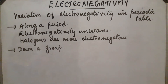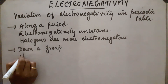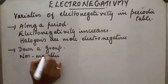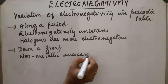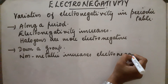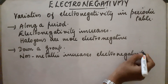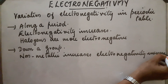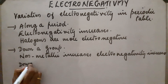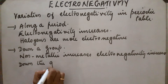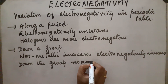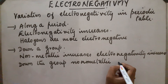Electronegativity is related to non-metallic character. As non-metallic character increases, electronegativity increases. Down the group, non-metallic character decreases, which means electronegativity also decreases.